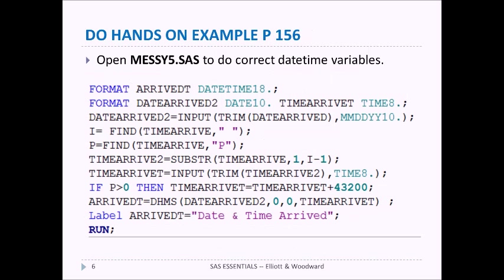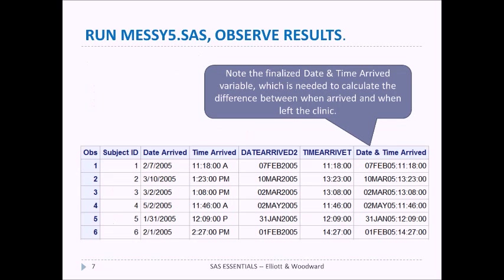Here's the code to do that. If you open up messy5.sas you'll see this code, which does everything we just described all together. When we run it, we can see date_arrive5 and time_arrive5 in text format, and then at the very right we have the date_and_time_arrived variable where the date and time are combined into one single variable.